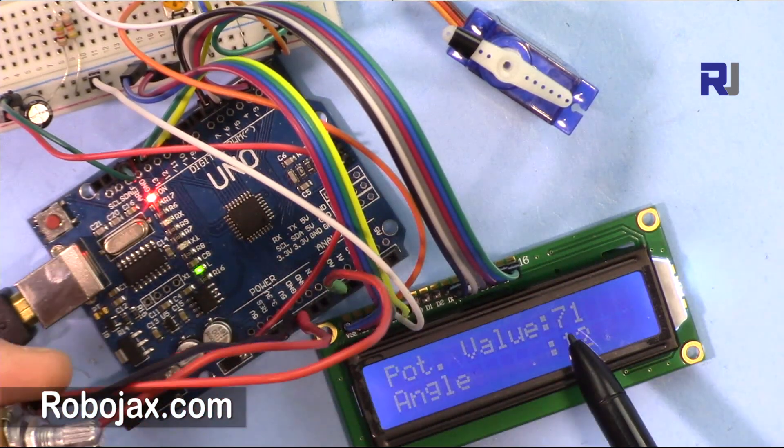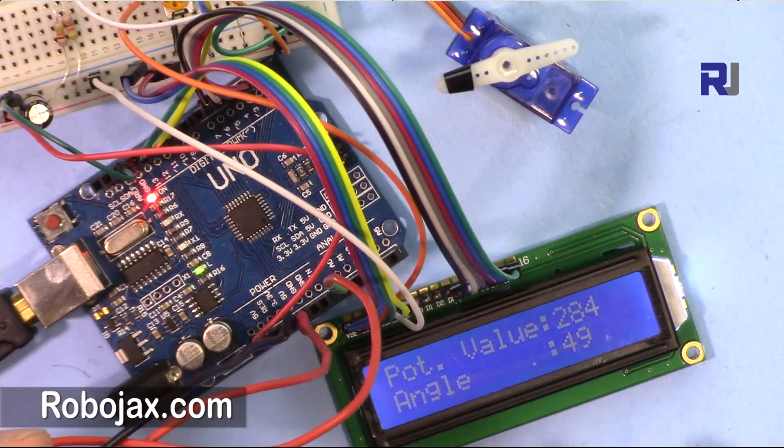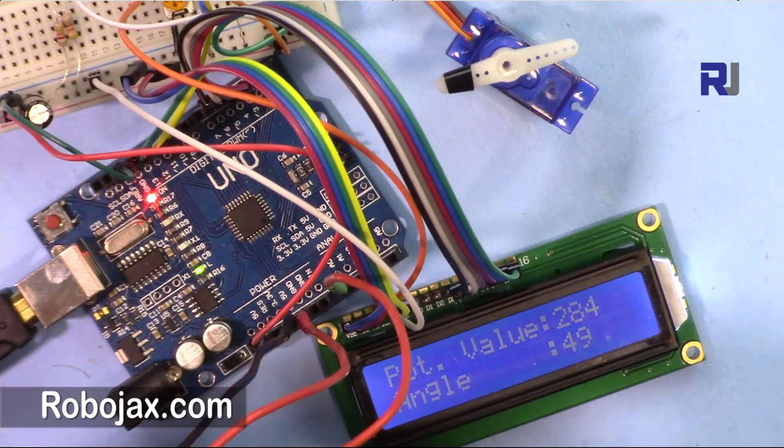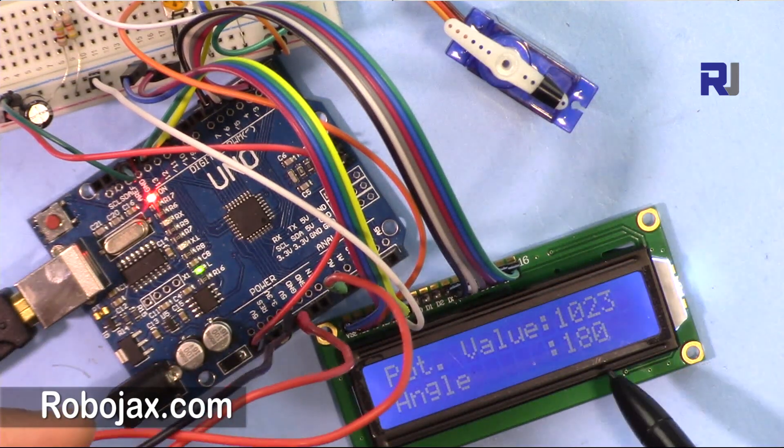Here it shows the potentiometer value and also shows the angle. As you can see, now it's at 49 degrees. Fully rotated, it's now 180 and so forth.